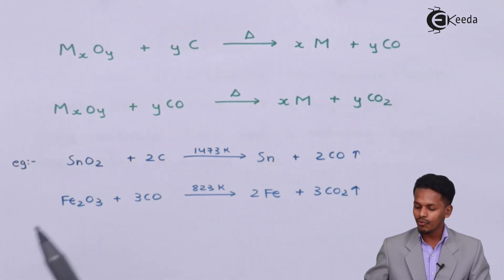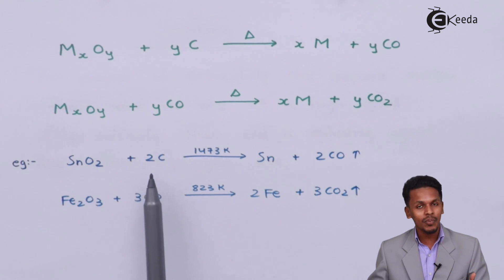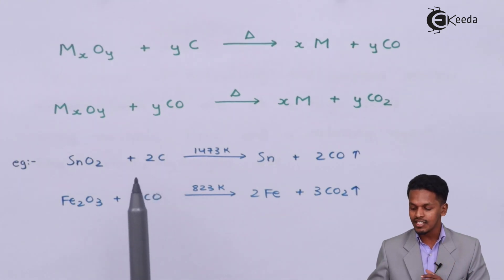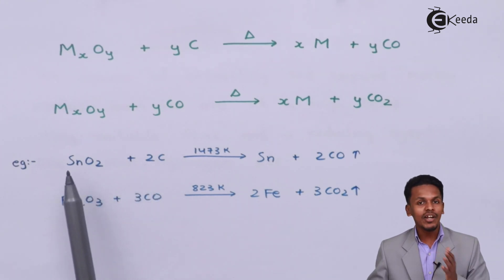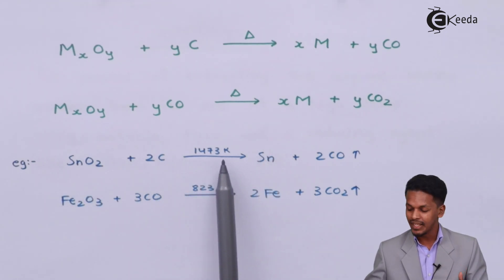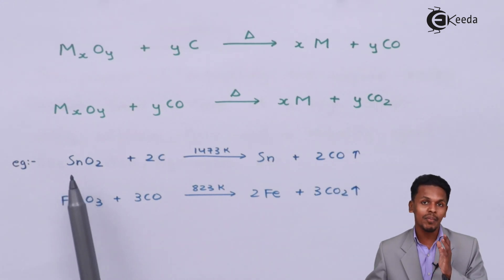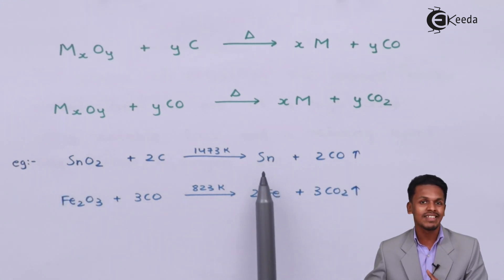Based on that, we have two examples. In this case, tin oxide SnO2 is treated with two moles of carbon as a reducing agent, which reduces the SnO2 to form Sn at a temperature of 1473 Kelvin. The byproduct is a volatile gas, two moles of CO (carbon monoxide). Thereby we are converting the metal oxide to crude metal, in this case tin.